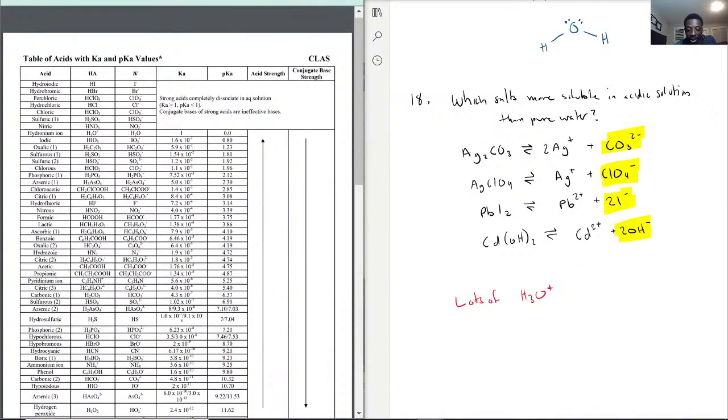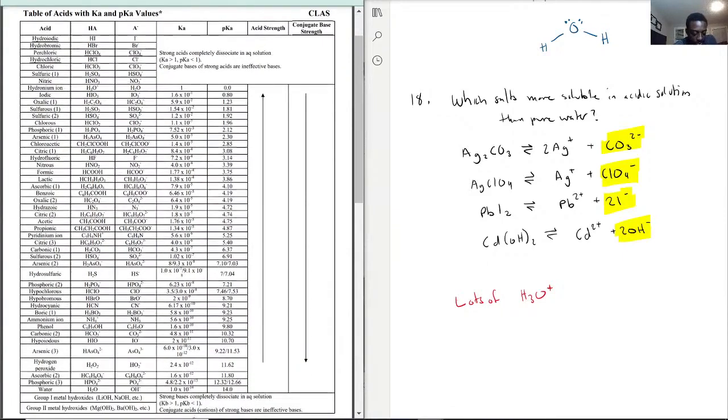We're going to look at the A⁻, the conjugate bases. That's really what these are. CO₃²⁻, where does that go? Carbonic, right here CO₃²⁻. That's pretty high.